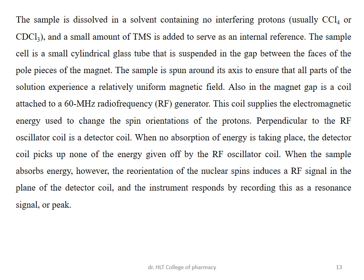The sample is dissolved in a solvent containing no interfering protons — the solvent must not contain hydrogen, since PMR detects only hydrogen. Common solvents include carbon tetrachloride (CCl₄) or deuterated chloroform (CDCl₃), where the hydrogen is replaced by deuterium. A small amount of TMS (tetramethylsilane) is added as an internal reference standard, producing a peak at 0 on the chemical shift scale against which sample proton peaks are measured.